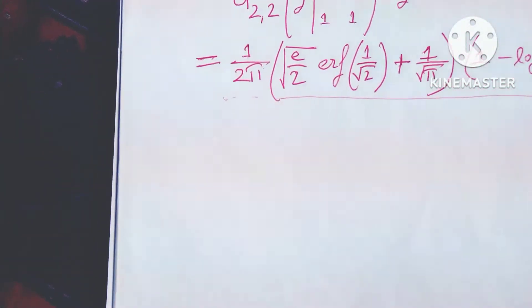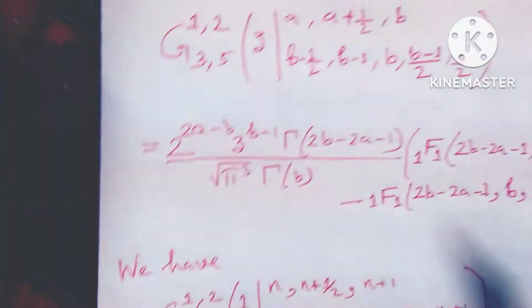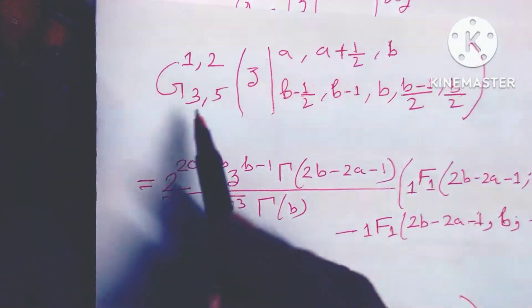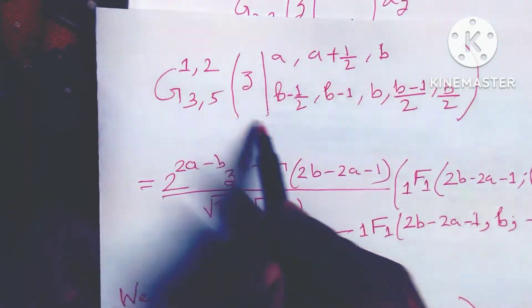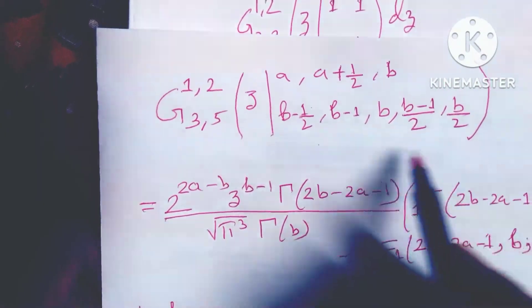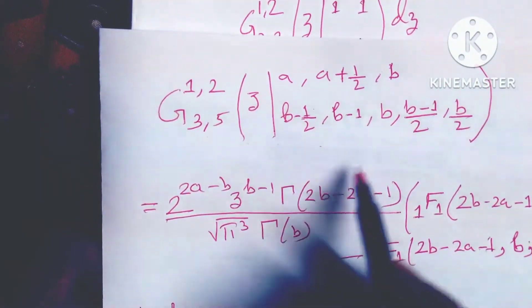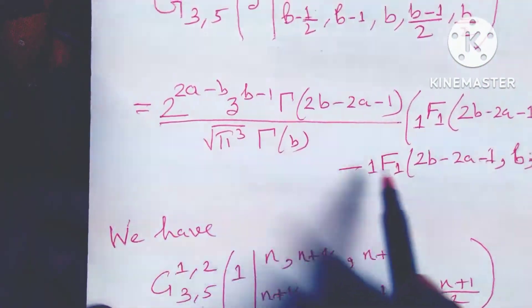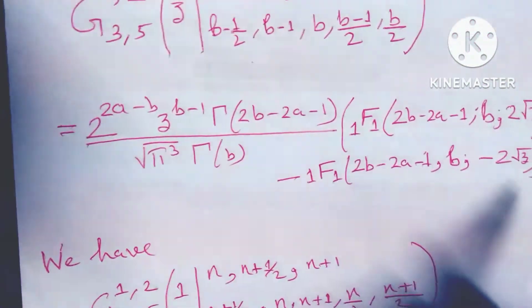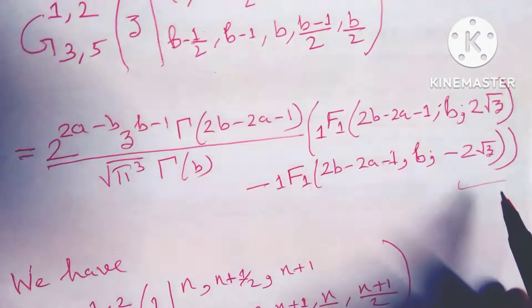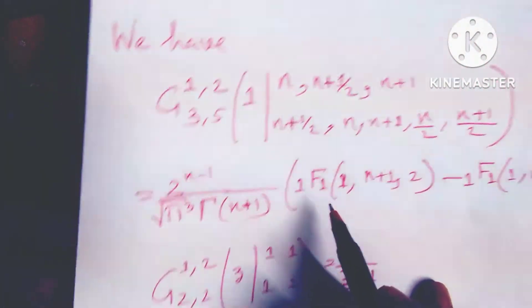You have to know that this result — this result is very, very important. The formula is: g(1 to 3/2) of z, a, a plus half, b, b minus half, equals 2a to the power... Remember, this is the formula. Okay, this is the formula. I apply this formula.